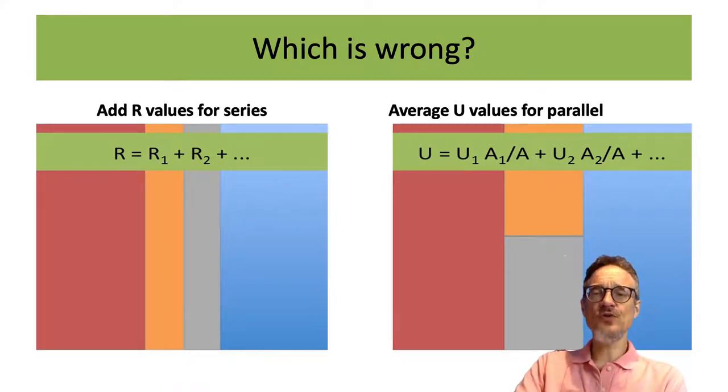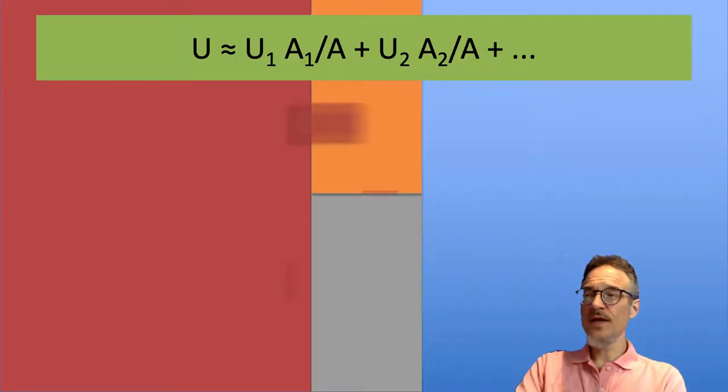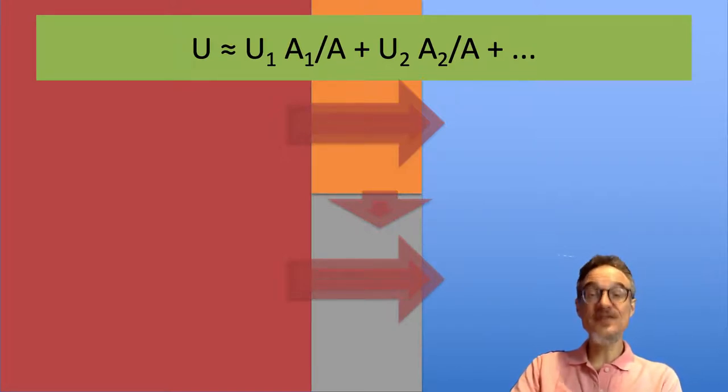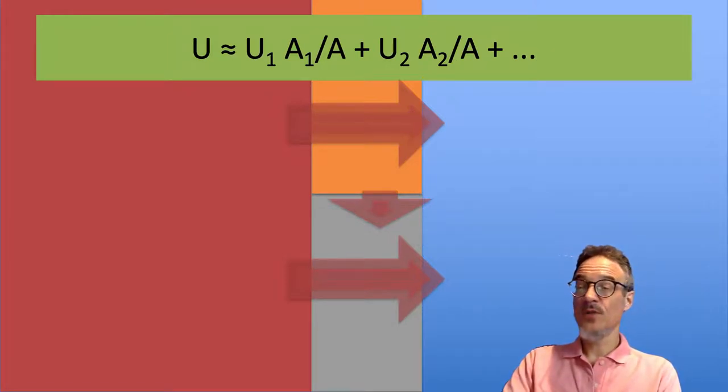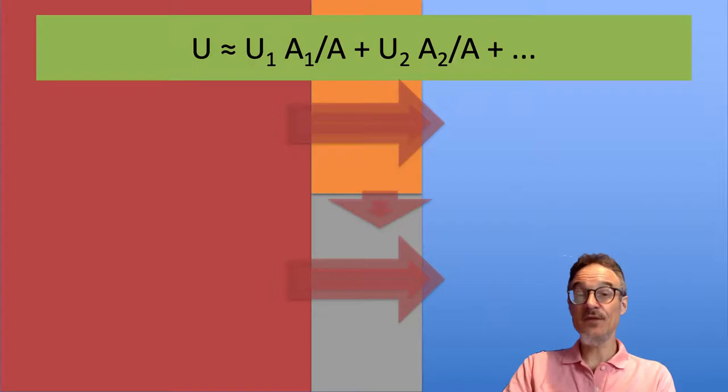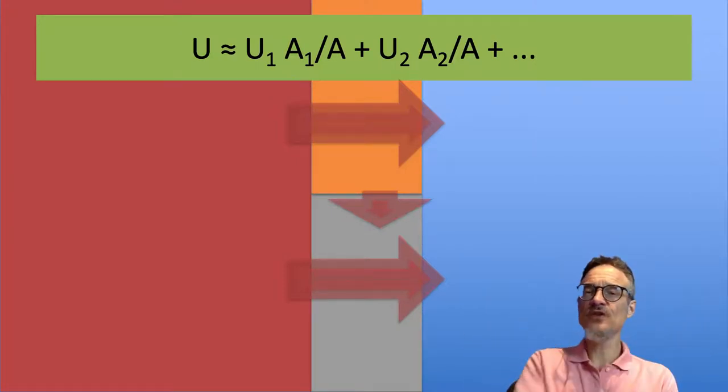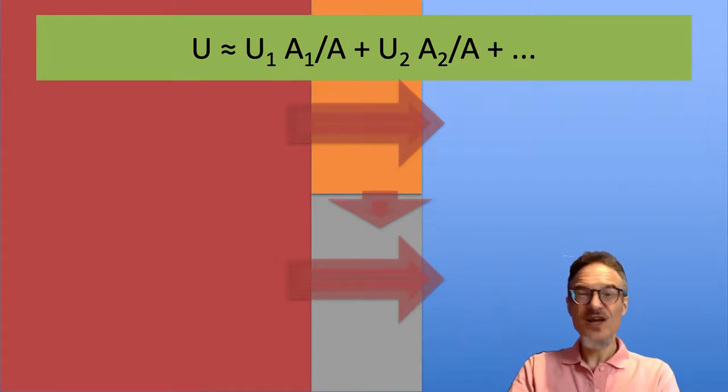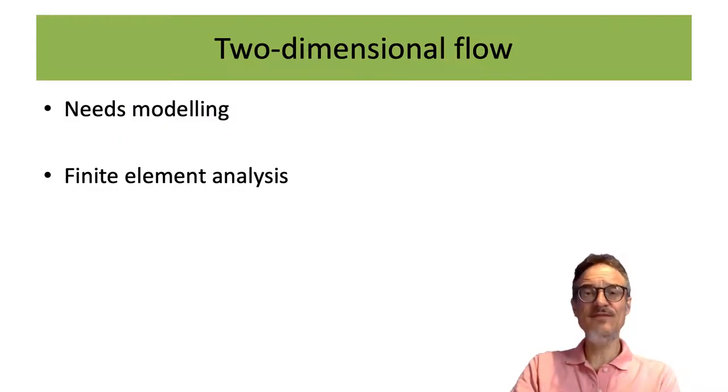What happens with heat flow is you do get heat flowing through one insulator. It will flow more quickly through the worse insulator. So the part of the wall that has a higher U value, the heat's going to move more quickly. And you're going to get some heat going from there into the other insulator. So what's happening is the heat's not just going in one direction. It's also going in a second dimension. So you've got two-dimensional heat flow. And our equations only work for one dimension.